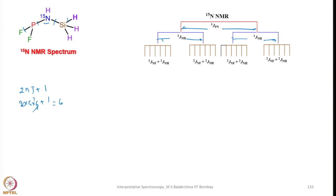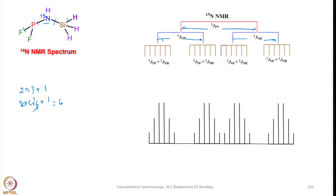So each should be a sextet — 1, 2, 3, 4, 5, 6 — and the spacing is a little bit different compared to what we saw in case of 19F NMR. The spectrum looks something like this. So the 3 spectra given are for 19F, 31P, and 15N. What is left is 1H NMR.